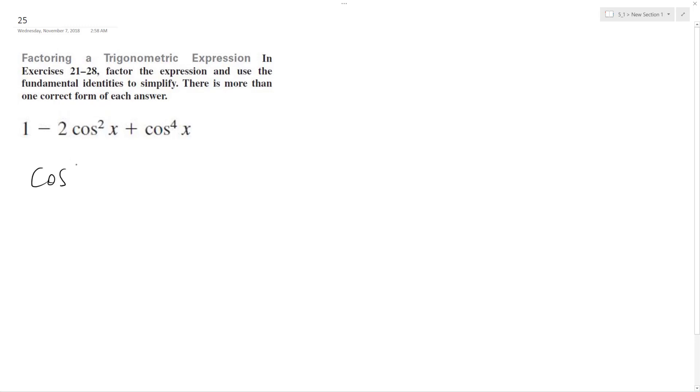We can actually rewrite this as cosine raised to the fourth x minus two cosine squared x plus one. And that means we can rewrite this as cosine squared x minus one, cosine squared x minus one. Rewriting this, so this is the same thing as cosine squared x minus one squared.